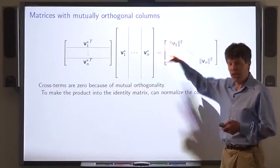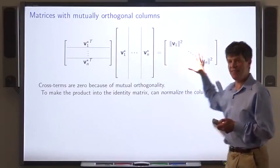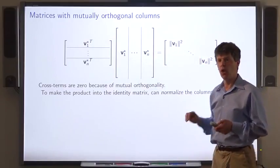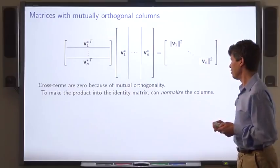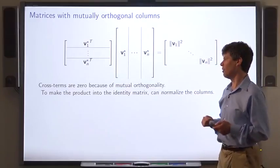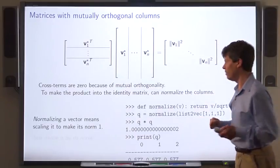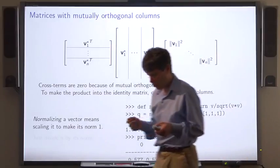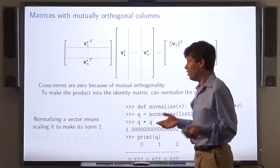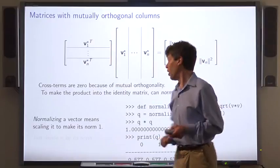Now, we can change things around so that instead of getting this diagonal matrix, we get the identity matrix by normalizing the columns. What does normalizing mean? Normalizing a vector means scaling it, multiplying it by a scalar, so as to make its norm one.